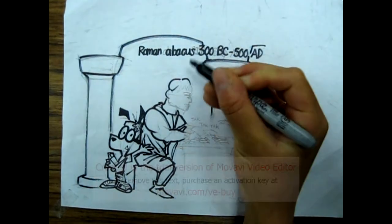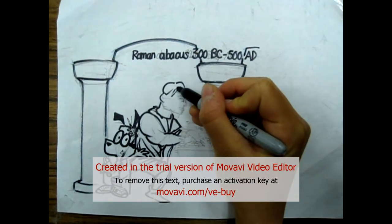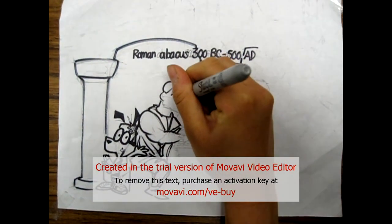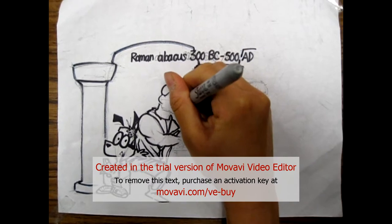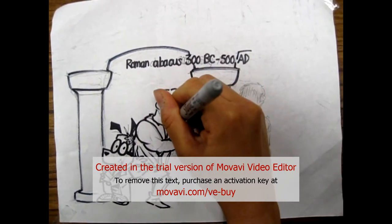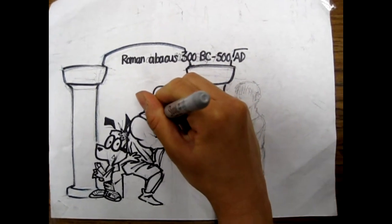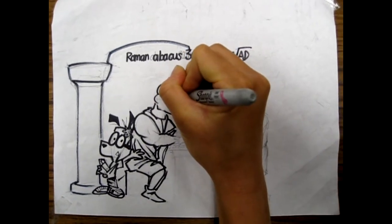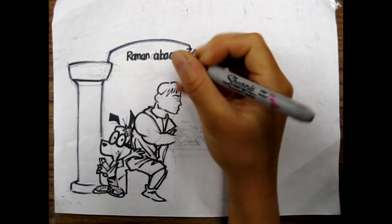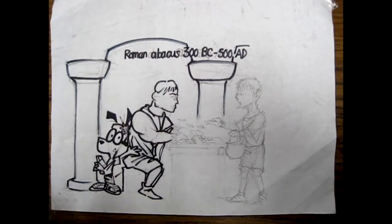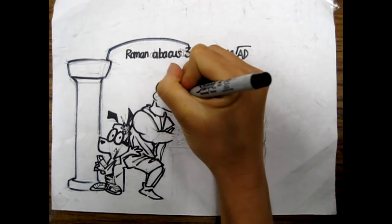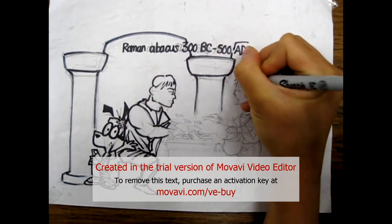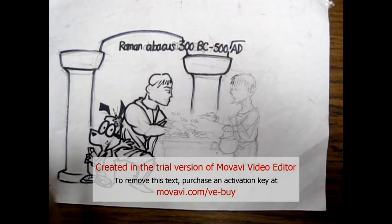The Roman hand abacus was invented around 300 BC to 500 AD. It was created to be convenient and portable for engineers and merchants. The Roman abacus is made out of a metal plate with eight long grooves and eight short grooves. The long grooves have up to five beads in each groove, and the short grooves have one or zero beads in each groove.